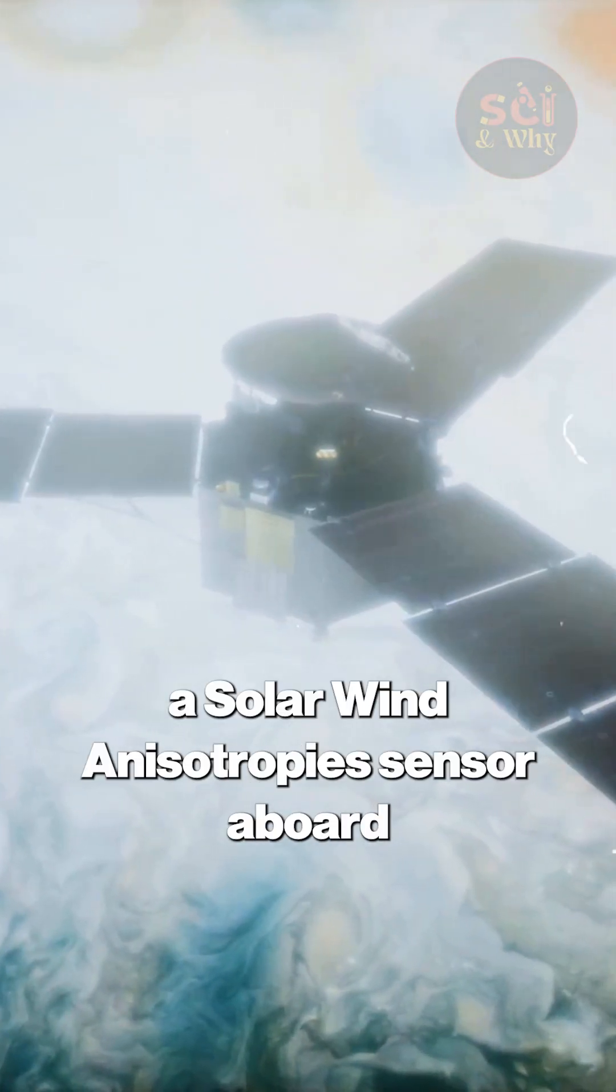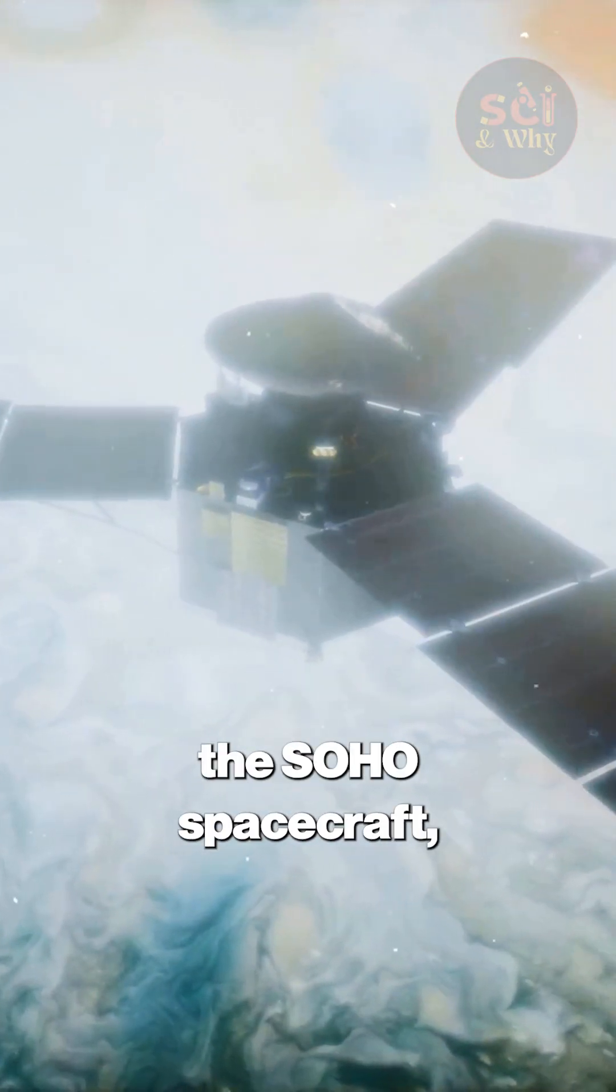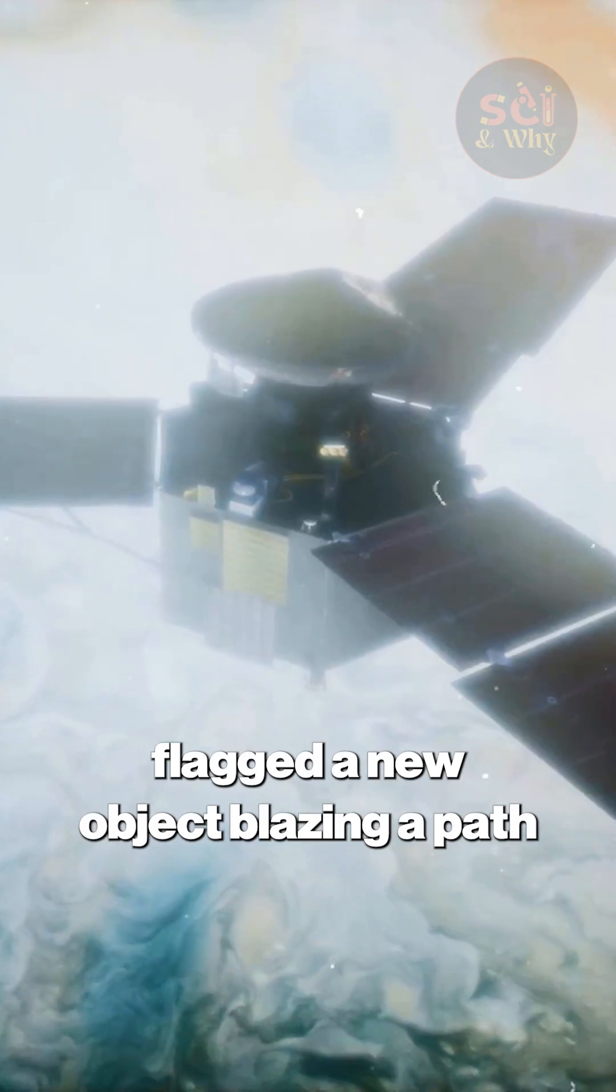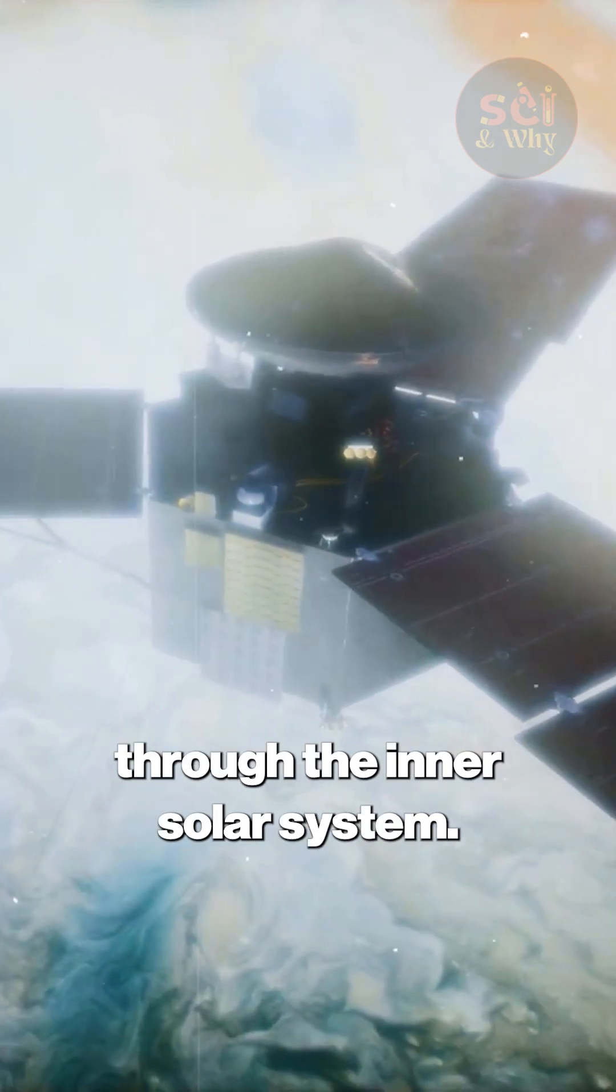The SWAN instrument, a solar wind anisotropy sensor aboard the Soho spacecraft, flagged a new object blazing a path through the inner solar system.